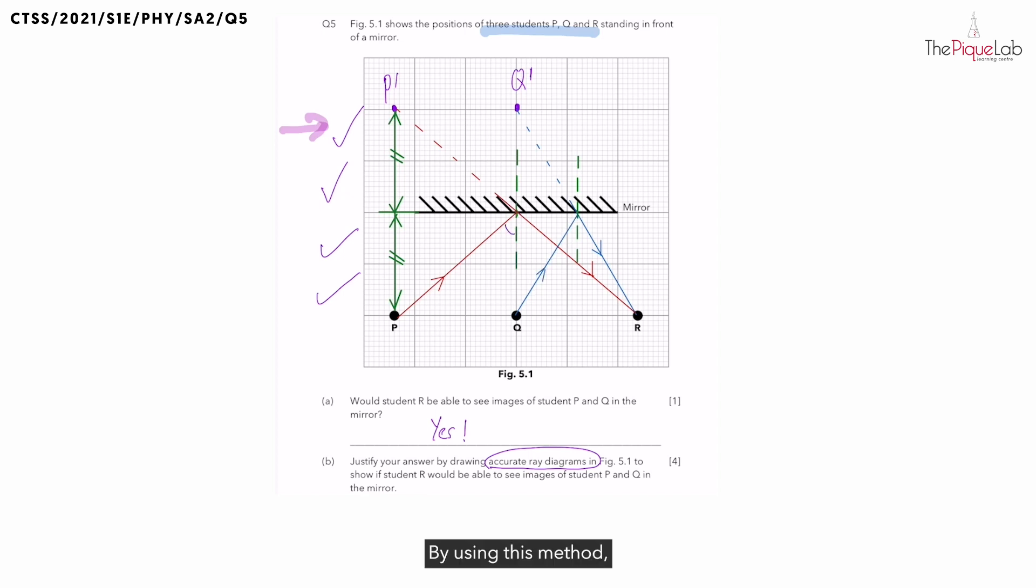By using this method, we are ensuring that both angles are equal. If you don't believe me, you can pause the video and check that both angles are equal using a protractor. Remember angles are measured from the normal and not the surface of the mirror. So this is how you draw an accurate ray diagram showing how the images of student P and Q can be seen by student R.